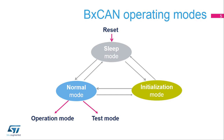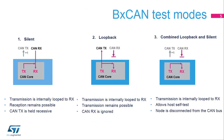When the CAN is in normal mode, the user can select whether to run in operation or test mode. The BX CAN supports three test modes. In silent mode, the BX CAN is able to receive valid frames, but it sends only recessive bits on the CAN bus and cannot start a transmission. Silent mode can be used to analyze traffic on a CAN bus without affecting it by the transmission of dominant bits.